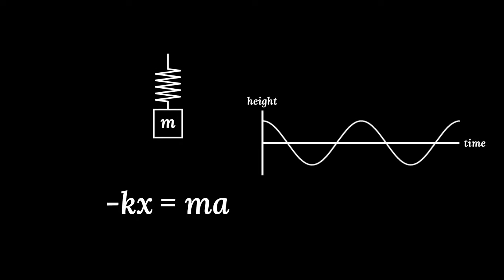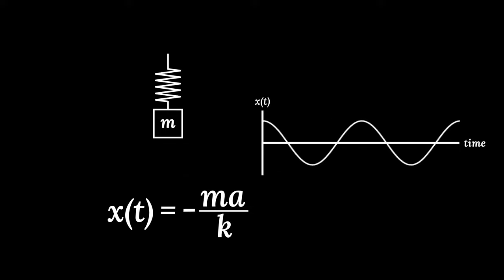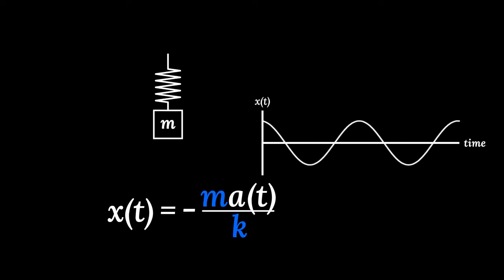Let's define the height of the block over time as a function x of t. First, we'll move things around so x gets the left side to itself. k and m never change. They're inherent properties of the spring and mass. But we have a problem. a does change over time. Acceleration is change in velocity, and velocity is change in position. We can see the position is changing. The velocity must be changing too, since the mass speeds up, slows down, and changes direction.